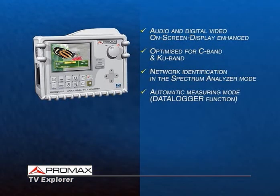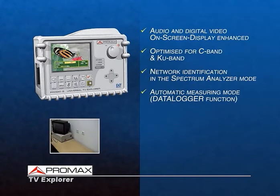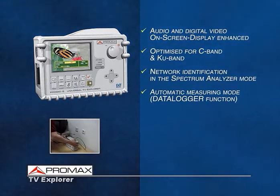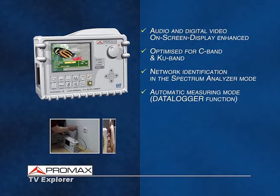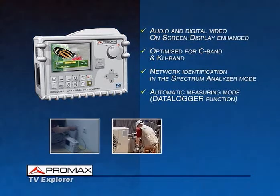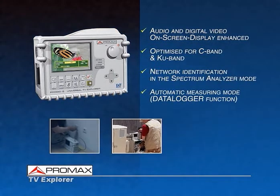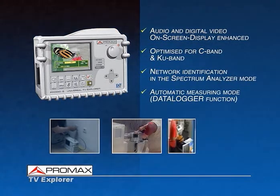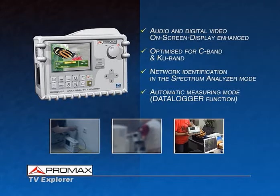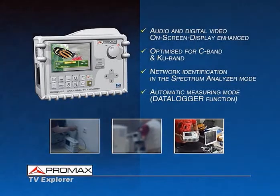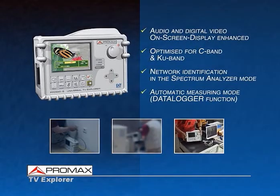Taking advantage of the Explorer's measurement and storage capacity, a new automatic acquisition function has been incorporated: the data logger. The measurements are stored in memory and can be downloaded to a computer for later analysis, processing, and printing.